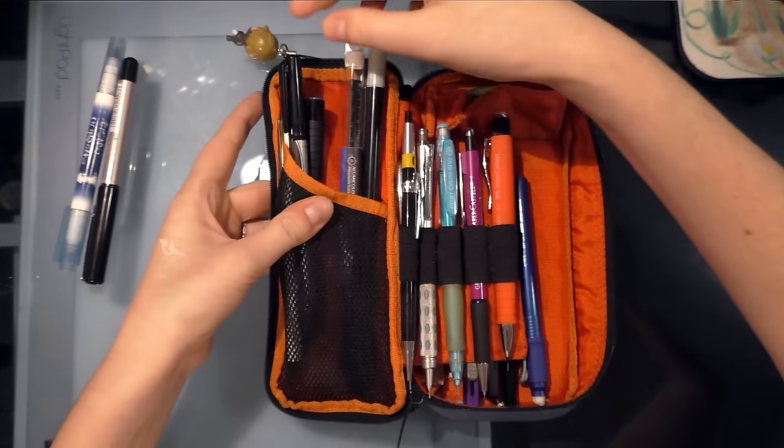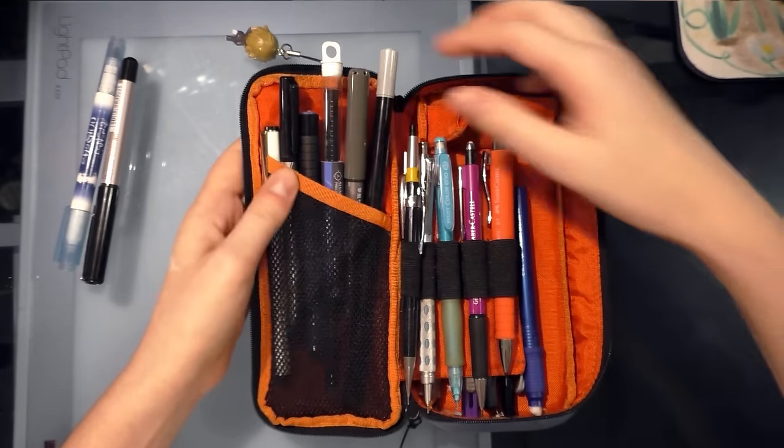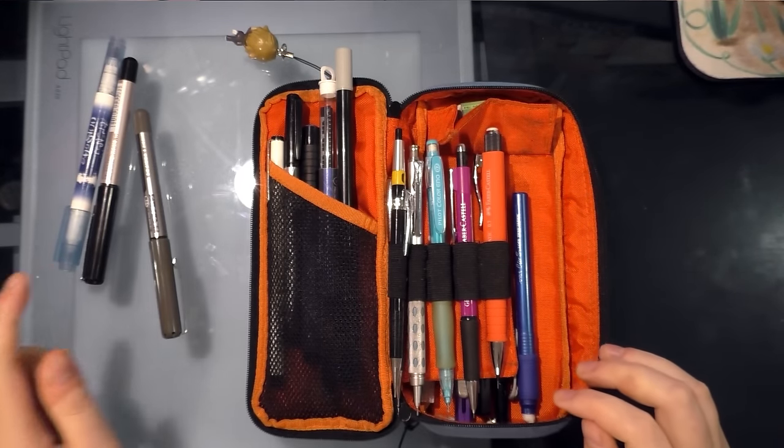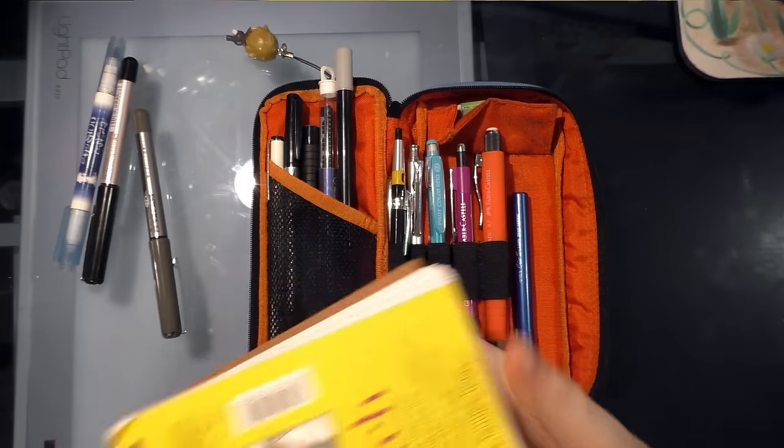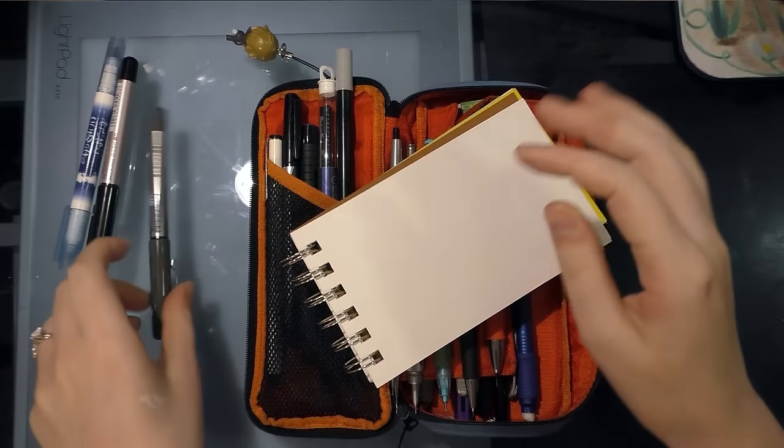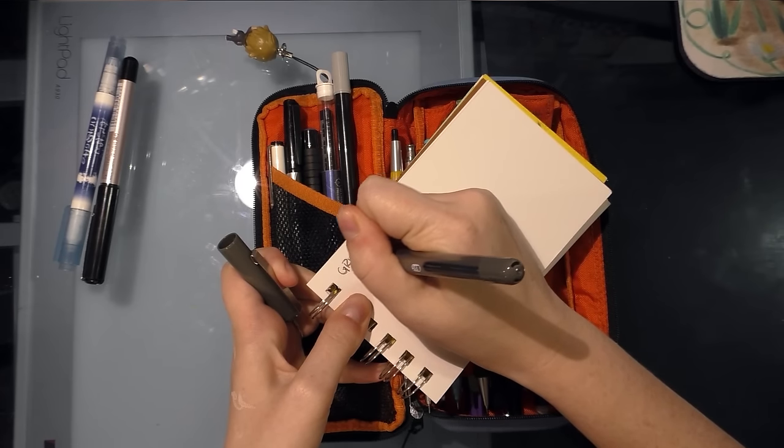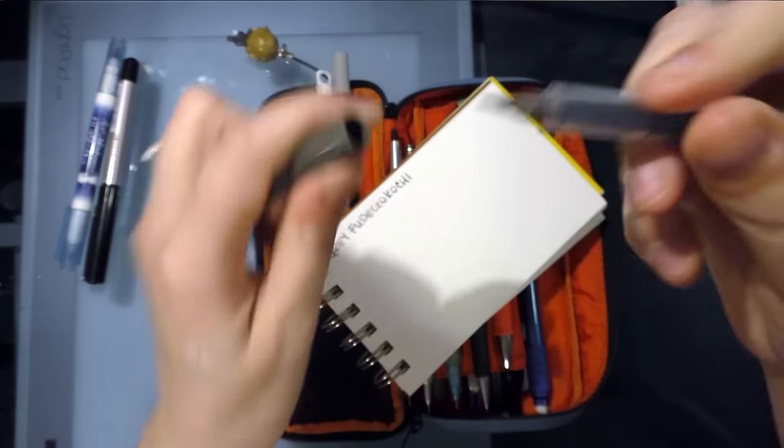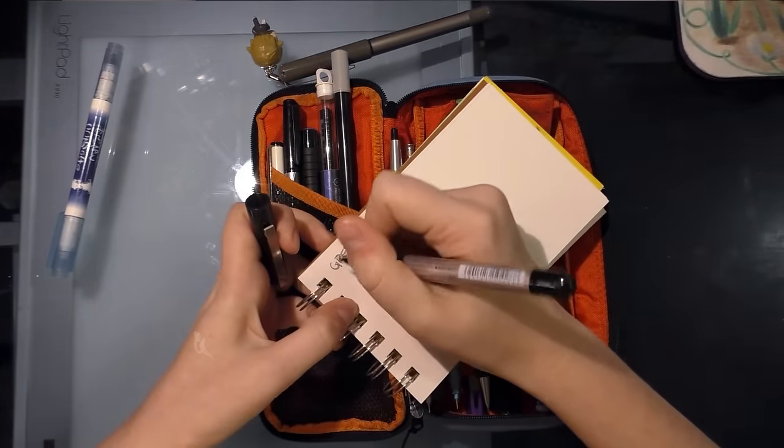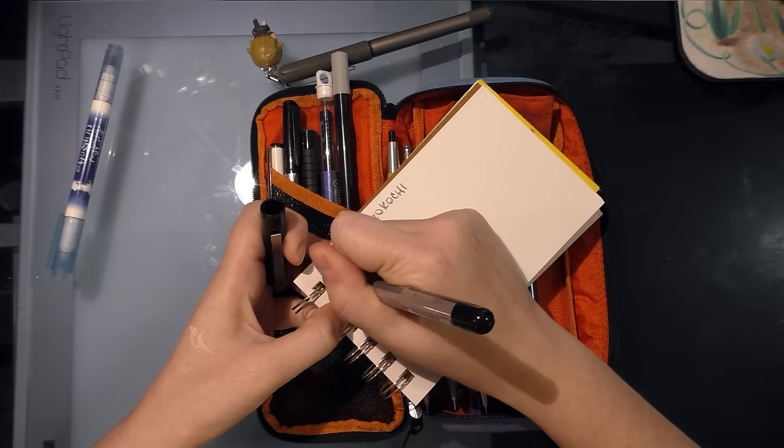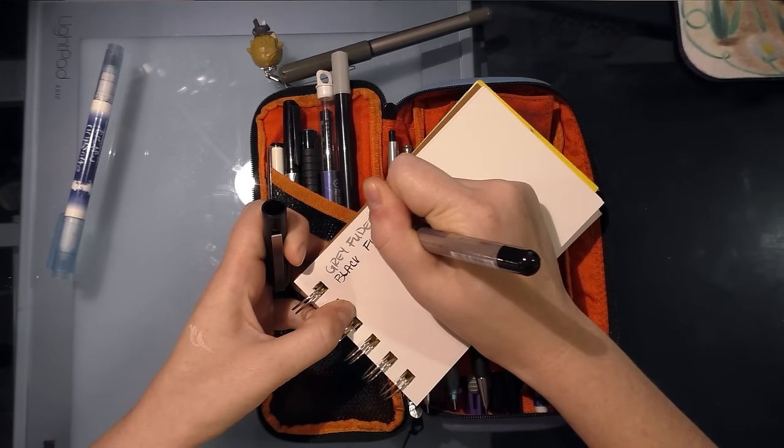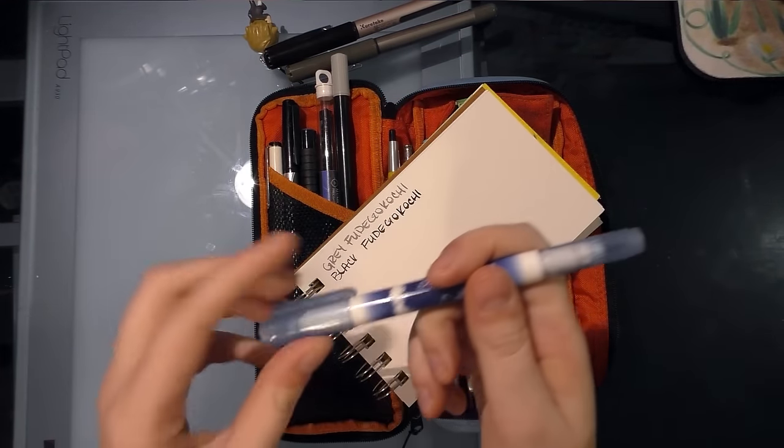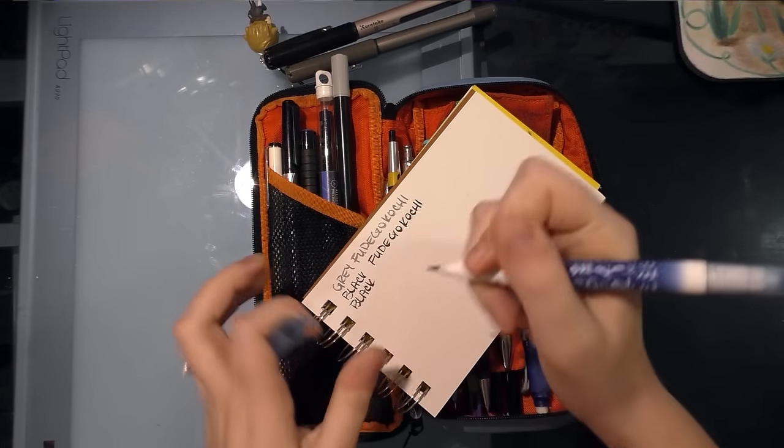So I also kind of carry random miscellaneous depending on my mood. So right now I have a gray Fude Gokochi. I guess I should grab a scrap of paper to show you guys. And these fude pens are kind of brush pens with like a rubbery, I think it's like a foam tip. And they're traditionally used for signing your name in calligraphy or by Chinese and Japanese calligraphers, but I like using them for inks.